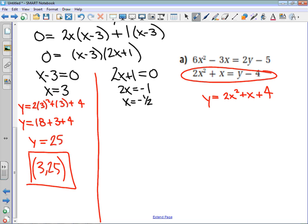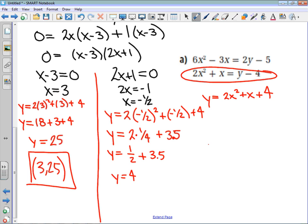When x is equal to negative 1 half, y is equal to 2 times negative 1 half squared plus negative 1 half plus 4. I'm going to cheat a little bit on this one. This is y is equal to 2 times 1 fourth plus 3.5. That's just 4 plus negative 1.5 there. And then this becomes y is equal to, well, 2 times 1 quarter is 1 half, and 1 half plus 3.5 is 4. So my two solutions are these coordinates. We get 3 comma 25 as a solution and negative 1 half comma 4 as a solution.